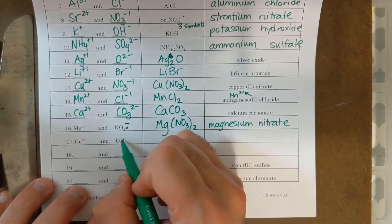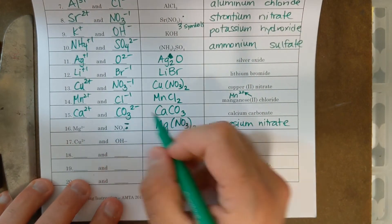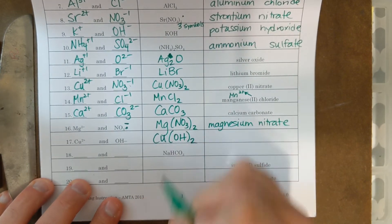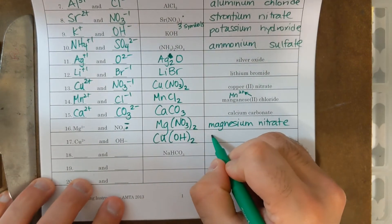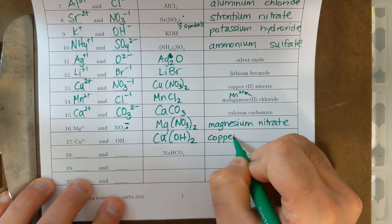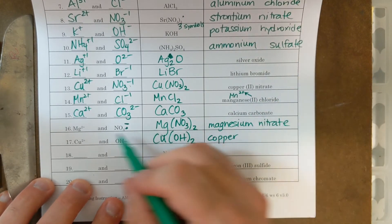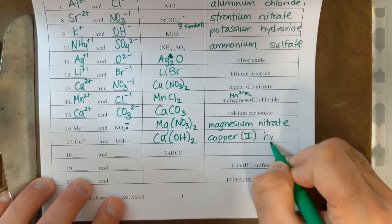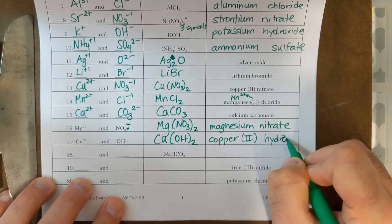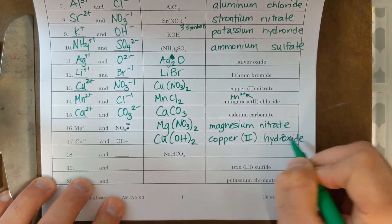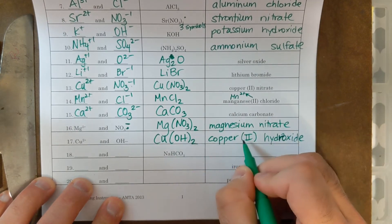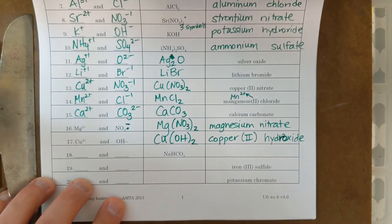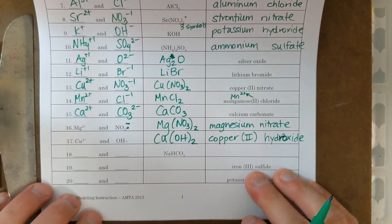Now I have Cu two plus and OH minus. If I do the crisscross method, I'm going to need two OHs for every one Cu. And this is going to be copper. Copper does need a Roman numeral. Its charge is plus two, so it's going to be Roman numeral two, hydroxide. It doesn't matter that there's two hydroxides. The Roman numeral two will help me figure out how many hydroxides. It doesn't tell me, but it helps me figure out that in the formula.